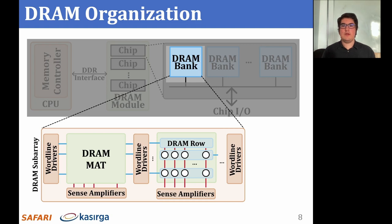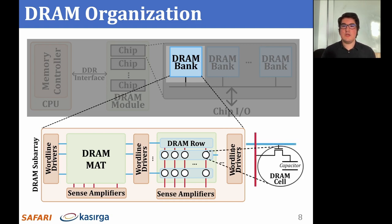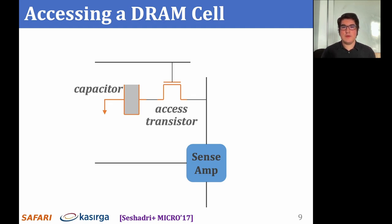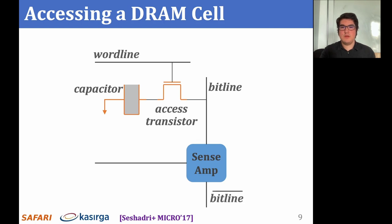Here's a simplified diagram of a DRAM cell. We will look at how we access this DRAM cell, showing how a DRAM cell is connected to a sense amplifier. Inside a cell, there are two components: the capacitor stores data, and the access transistor determines if the cell is being accessed. The access transistor is controlled by the wordline, which is enabled to connect the DRAM cell to its bitline. The bitline bar is essentially the inverse of the bitline. The DRAM sense amplifier has an enable signal which determines if the sense amplifier is currently active.